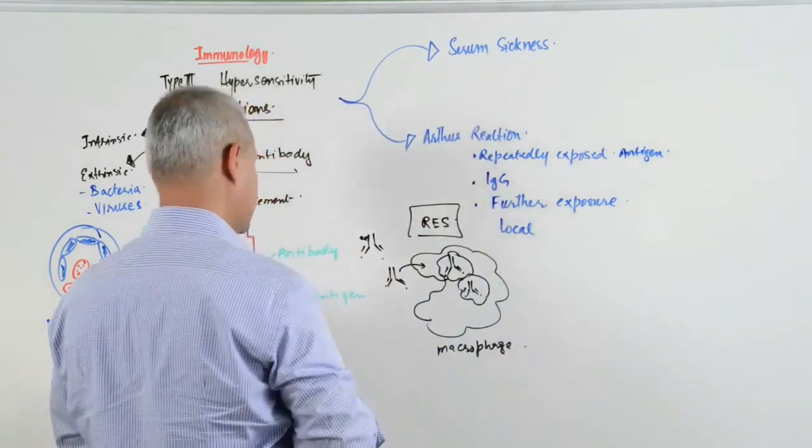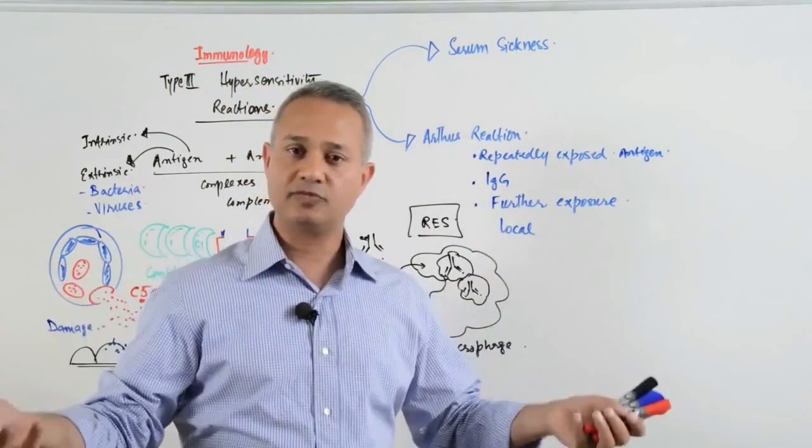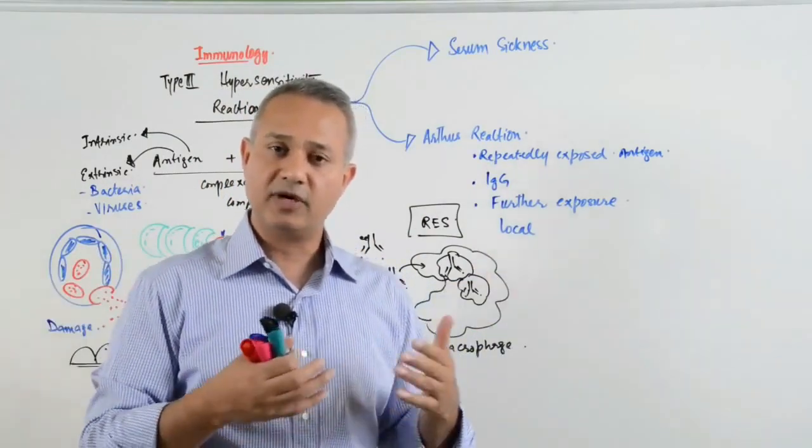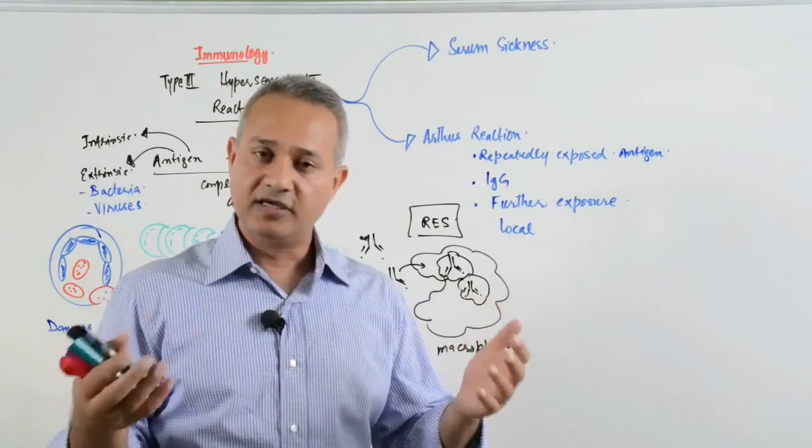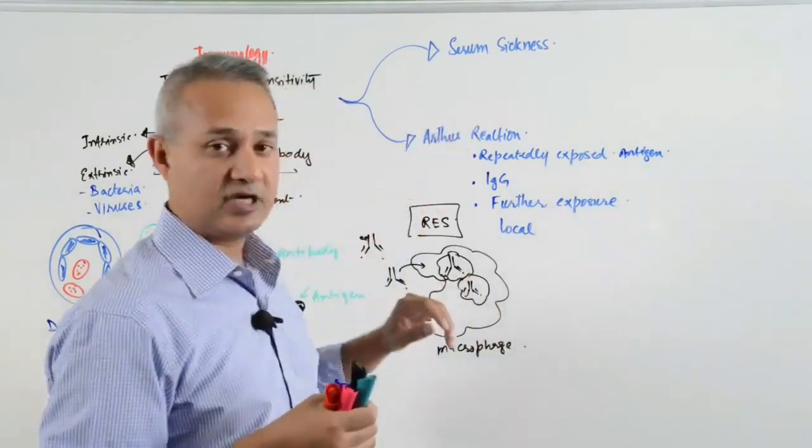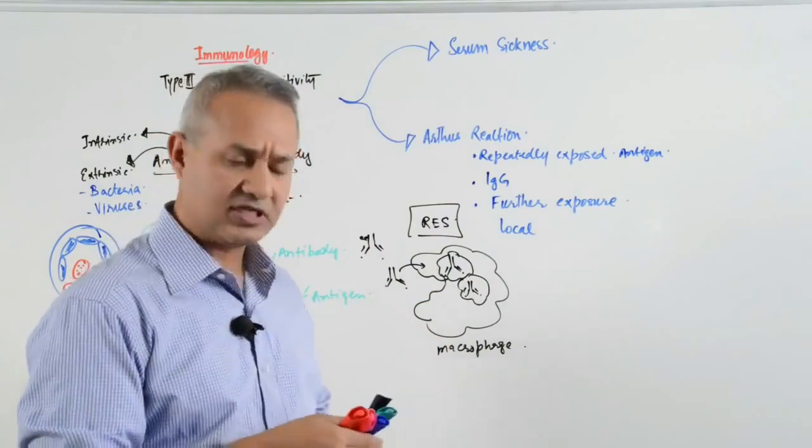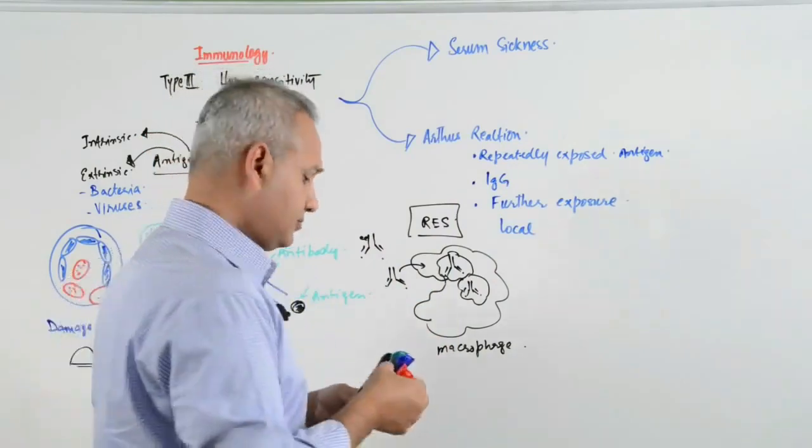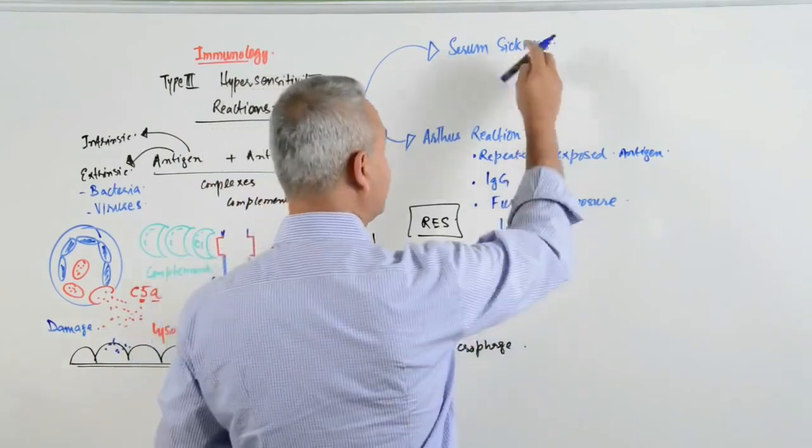Serum sickness, on the other hand, is named after when serum used to be transfused and there was not much knowledge of differences in human tissue antigens, causing sickness. Nowadays, serum sickness is really rare, but it is more systemic.